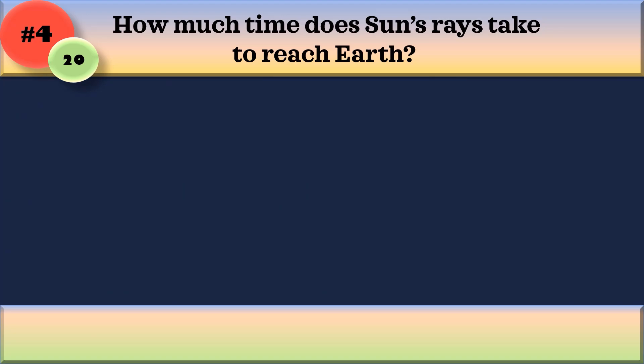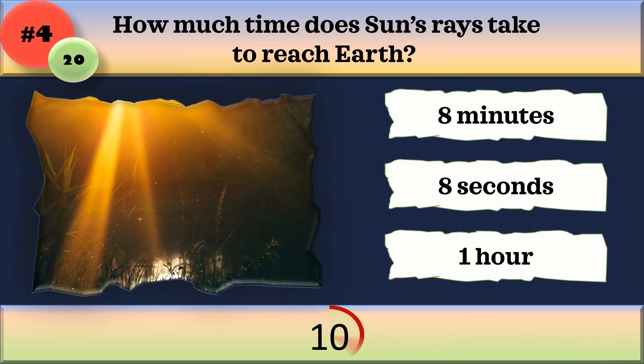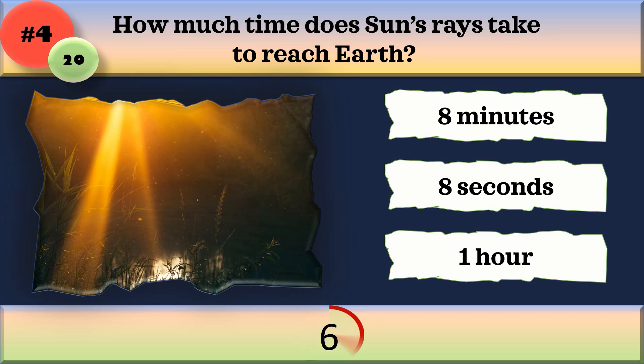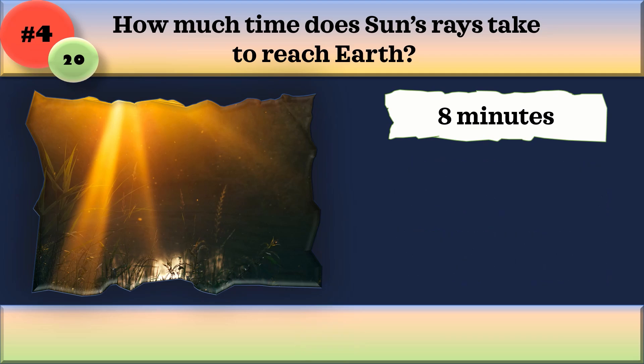How much time does sun's rays take to reach Earth? 8 minutes, 8 seconds, or 1 hour? It takes 8 minutes.